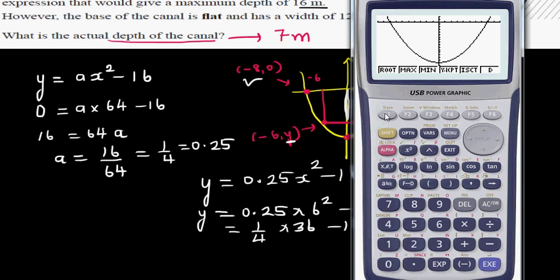So this is the canal. To just confirm it makes sense, g-solve, find the root. So this is when x is negative 8, y is 0. So the other root is 8 comma 0. And then the minimum is 0 comma negative 16.